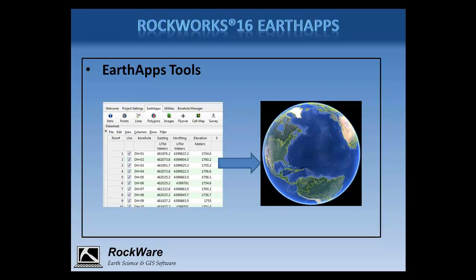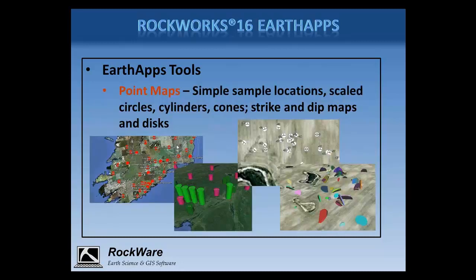So let's say you're just starting a new project with Rockworks. You can enter, import, or copy and paste your sample locations and surface measurements into the Rockworks data sheet. Then define the coordinate system you're using and the units for the data. Then you can create a variety of output types. You can create point maps, which illustrate your sites with symbols, scaled circles, 3D cones, and cylinders.